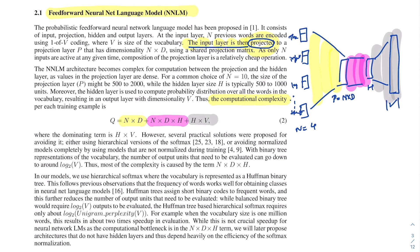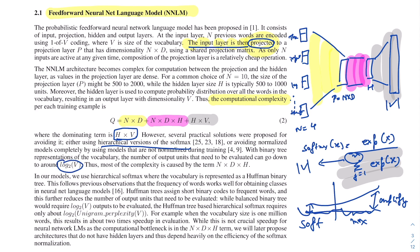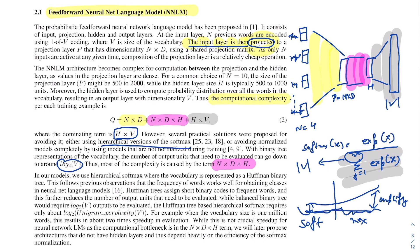Since the vocabulary is huge, the H×V term dominates the complexity. The softmax function normalizes over the entire vocabulary, making it expensive. The authors note this can be reduced to log(V) using a hierarchical binary tree softmax. However, since the word2vec architectures remove the hidden layer, the H×V term disappears — but the output layer complexity remains, making optimizations like hierarchical softmax still important.